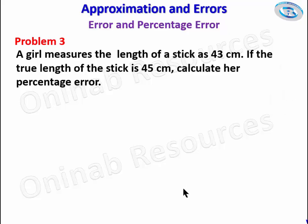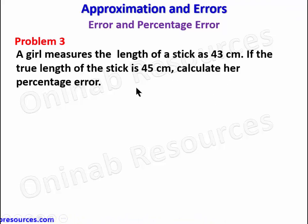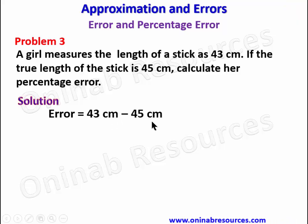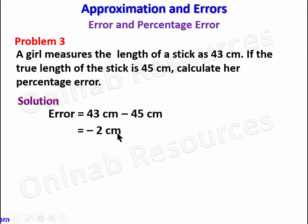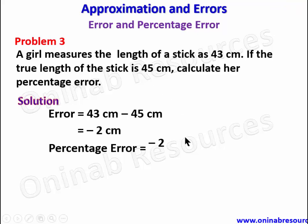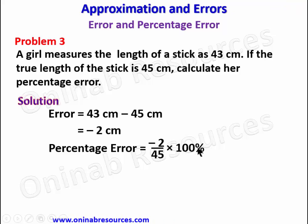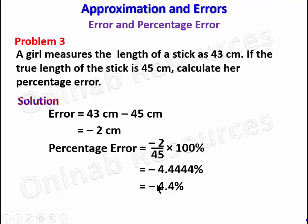We go to problem three. Eagle measures the length of a stick as 43 centimeters; the true length of the stick is 45 centimeters. Calculate the percentage error. The error is the measured value minus the actual value: 43 minus 45 gives negative two centimeters — the error here is negative. The percentage error is negative 2 over the true value (45), times 100 percent, which gives negative 4.4444 percent, or approximately negative 4.4 percent to one decimal place. That is all for problem three.